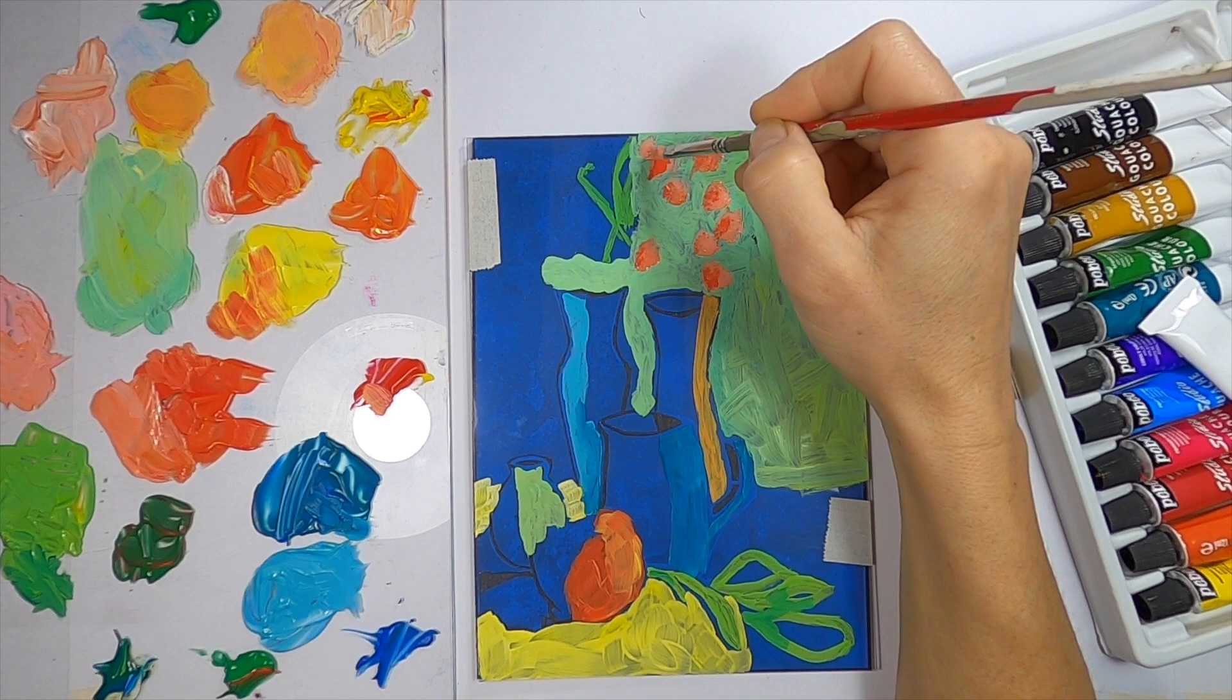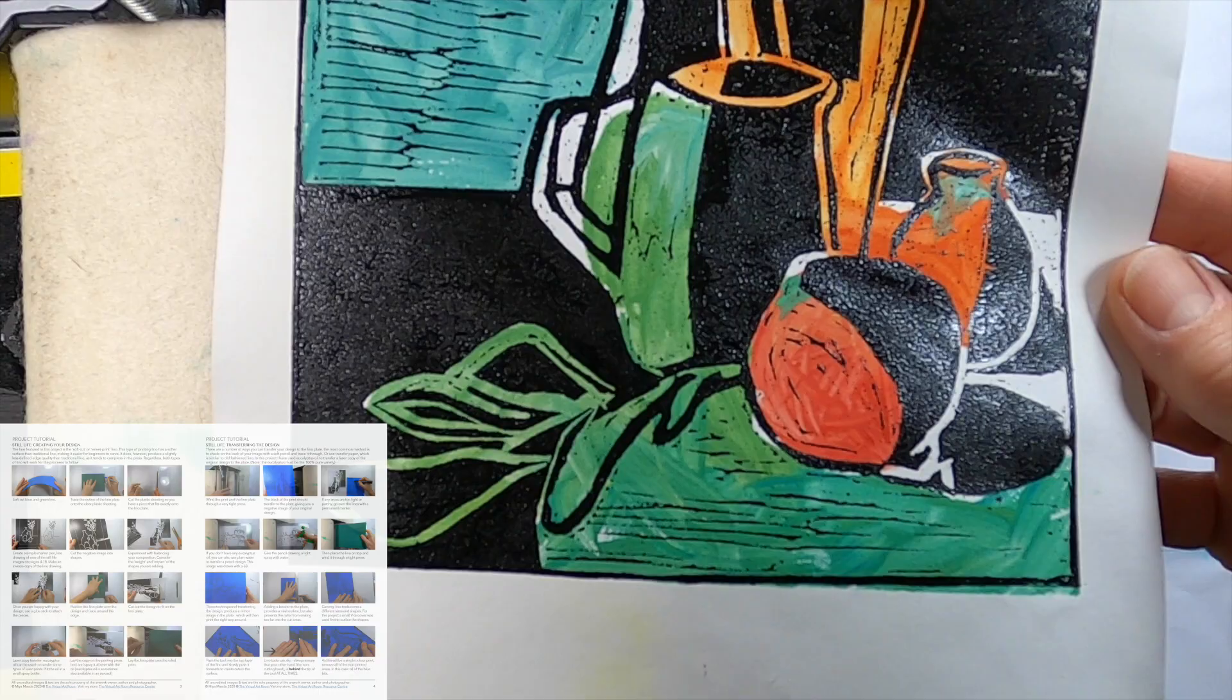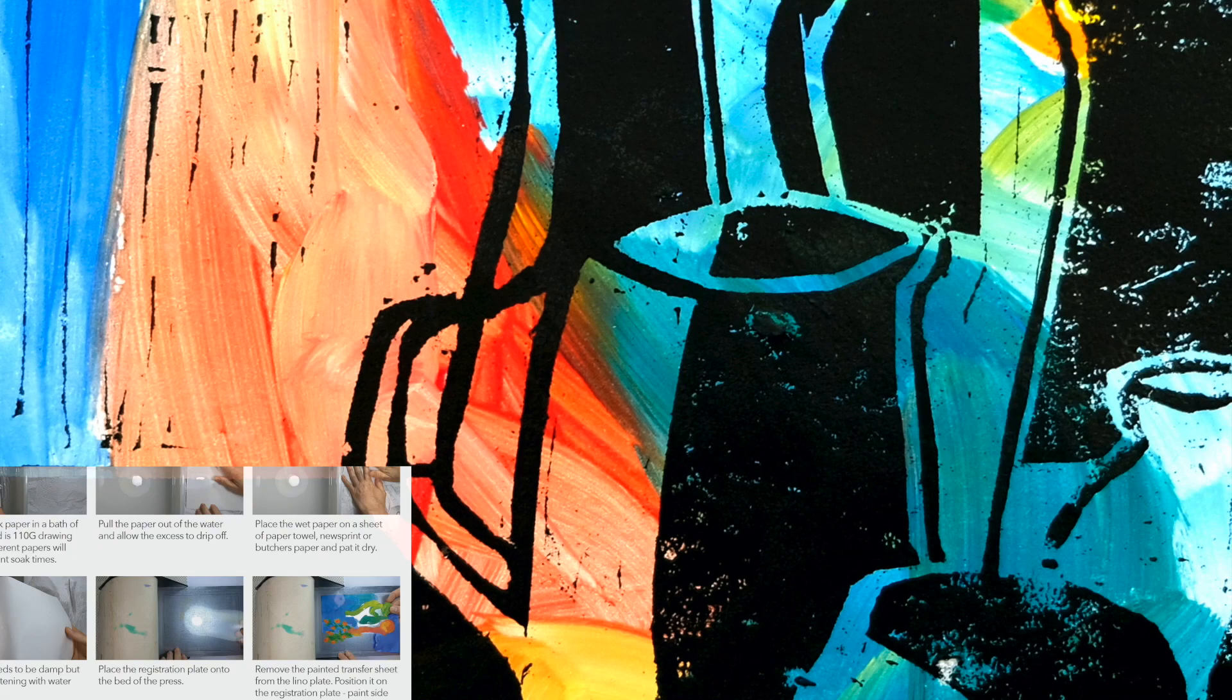In this project I'm going to demonstrate how to add color, texture and contrast to a traditional black and white lino printed design. The workbook for this project is available in the description below. As well as traditional lino techniques such as cutting, inking and printing, I'll also have a go at combining the lino printing process with a watercolor transfer process.